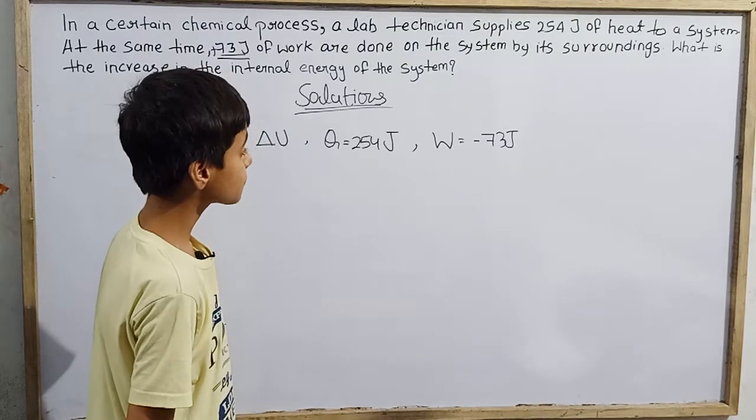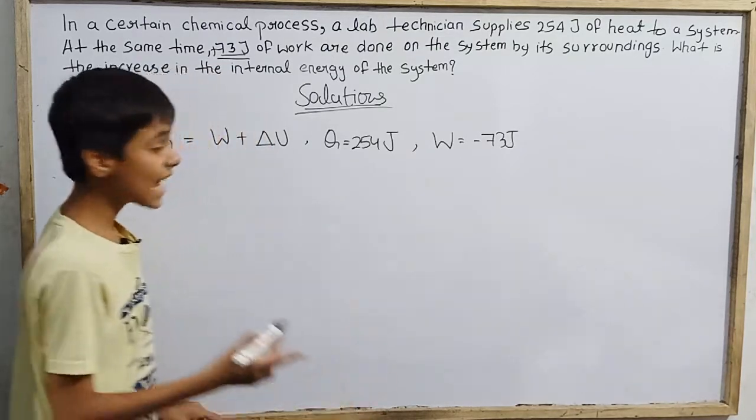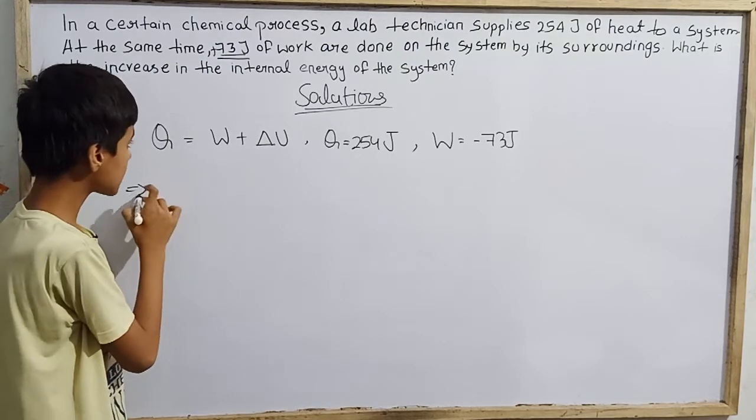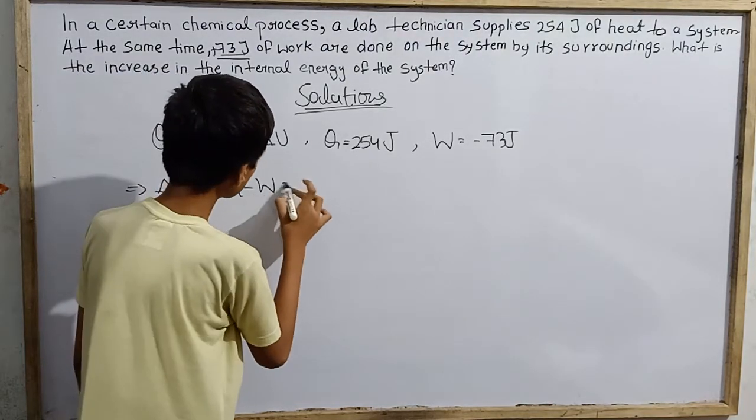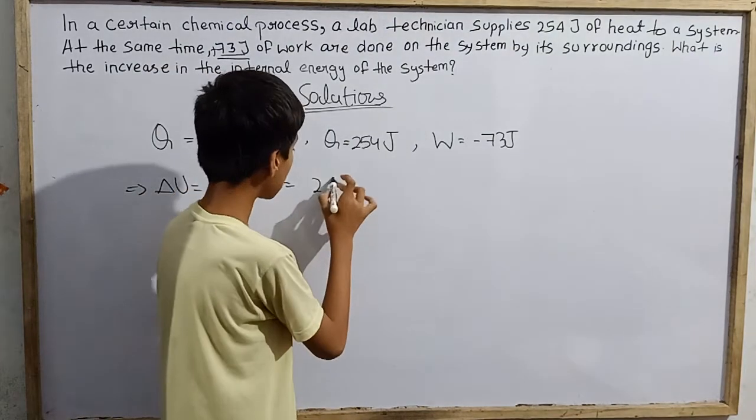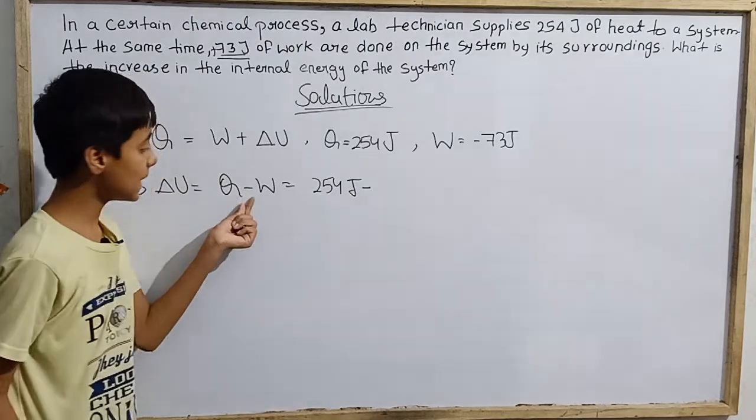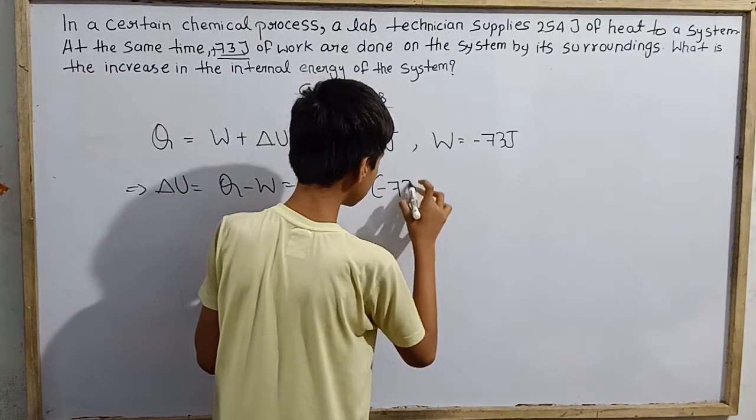Here we can write delta U's value as Q minus W. Q is already given as 254 joules, minus here is one minus, but another minus 73 joules.